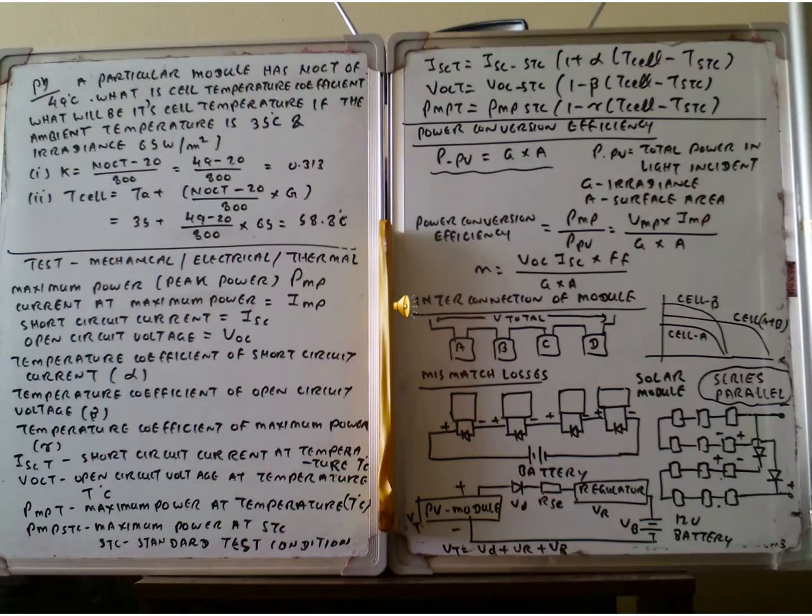So the next one is that we have to test the cell for the mechanical, electrical, and thermal strength, and also the maximum power, peak power PMP. The current at the maximum power is IMP, short circuit current is ISC, open circuit voltage is VOC. The temperature coefficient of the short circuit current is alpha, temperature coefficient of the open circuit voltage is beta, temperature coefficient of maximum power is gamma.